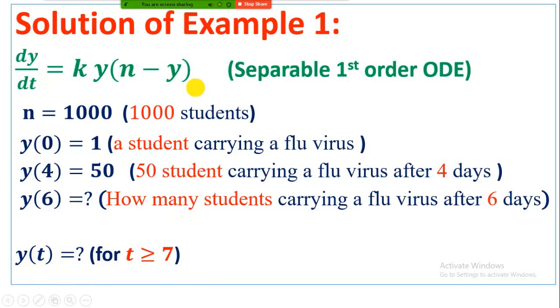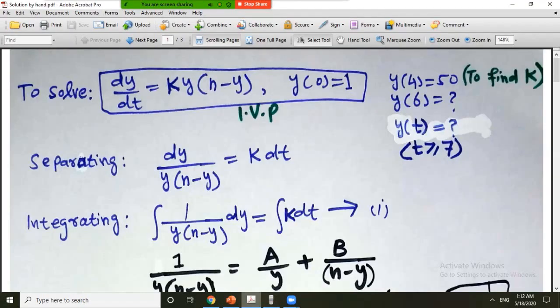So now we have to solve the first order separable ODE. dy by dt is equal to ky into n minus y and y of 0 is equal to 1. This is the initial value problem and y of 4 is equal to 50.